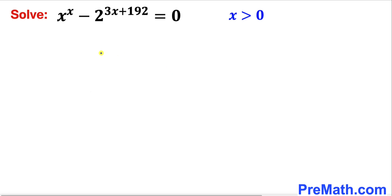Welcome to PreMath. In this video we are going to solve the exponential equation x^x - 2^(3x+192) = 0, where x > 0.